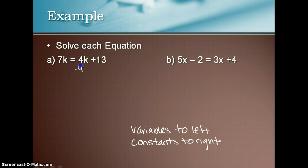We're going to subtract 4k from both sides. 7 minus 4 is 3k equals 13. Then divide by 3. k equals 13 over 3, and you can leave it like that.